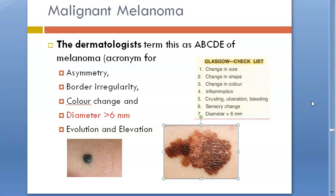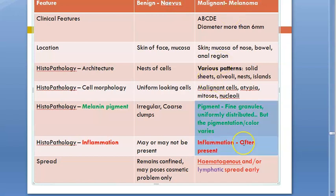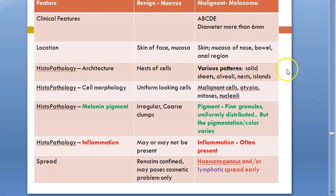Early treatment of malignant melanoma is the best. Malignant melanoma shows asymmetry, border irregularity, color change, diameter greater than 6 mm, and evolution. Inflammation will be present. On microscopy you will see malignant cells, ATP, mitosis, and nucleoli will be prominent. You will also see some patterns in the histology.